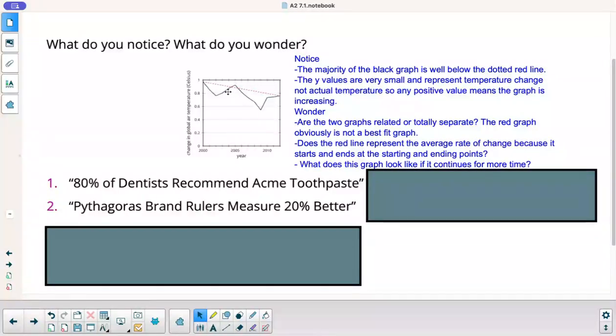I wonder, are these two graphs related or are they totally separate? Could the red graph be just some other graph and be coincidence that it ends and starts at the same points of the black graph? The red graph, I wonder, it's obviously not a best fit, but I wonder what it is. Does the red represent average rate of change? We talked about that. And what would it look like if it goes on for more time in either direction really? What would the graph be? This is only a snapshot of 12 years.